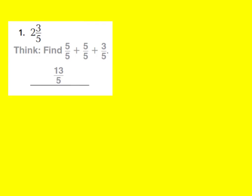5 plus 5 is 10, and 10 plus 3 is 13. Then I keep my denominator the same, which would be 5. So 2 and 3 fifths is the same as 13 fifths. I can check this problem by the way we learned it earlier: using multiplication then addition. We can say 5 times 2 is 10, and 10 plus 3 is 13. So we have 13 fifths.